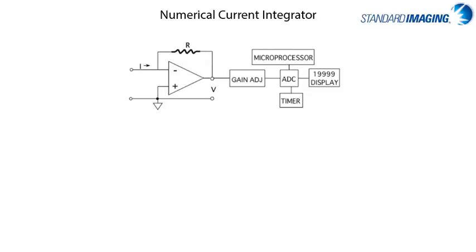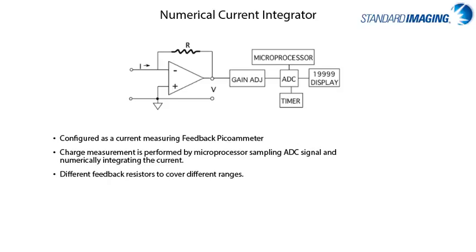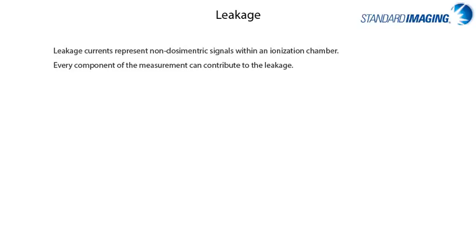Once the electrometer front end detects a signal, there are numerous ways to display that information. Standard Imaging electrometers use an integrator to measure charge by integrating current over a selected time period. It is important to discuss leakage within a system: leakage currents represent non-dosimetric signals within an ionization chamber and associated electrometer. Their effects are minimized with a well-guarded chamber, low-noise triaxial cables, and sophisticated electrometers. Every component — the electrometer, chamber, and triaxial cable — can contribute to leakage. A well-designed system will have leakage currents at least two orders of magnitude lower than the measured dosimetric signal of interest.